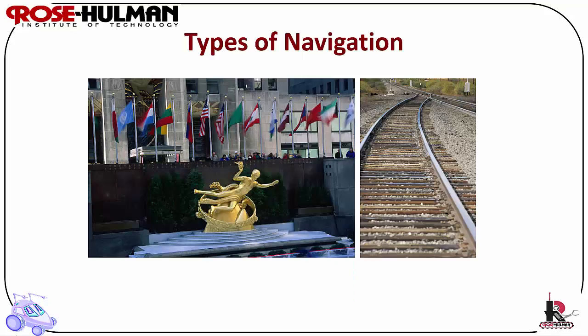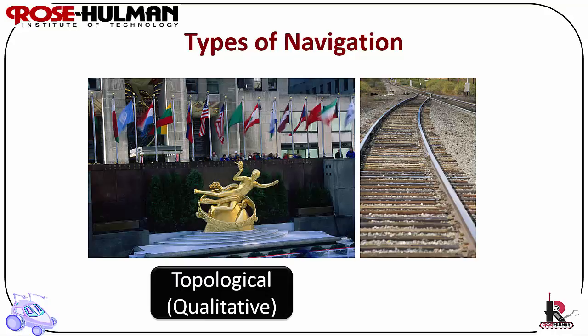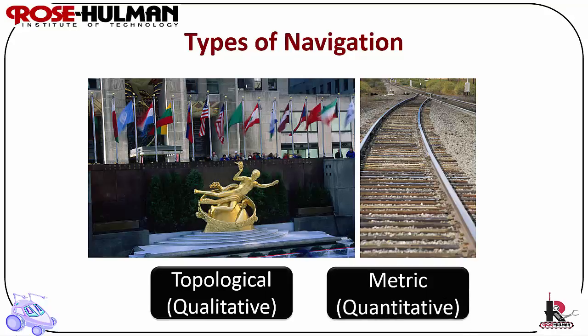Types of navigation: reactive robots have behaviors for moving about the world without collisions. However, navigation is more purposeful and requires deliberation. There are two types of navigation: topological, such as using a New York landmark like the Rockefeller Center to navigate, or metric, such as using miles and direction to navigate.